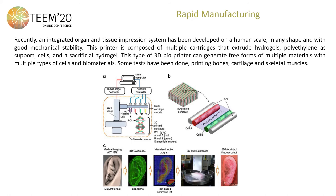The last step to get the prosthesis is rapid manufacturing. An integrated oral and tissue expression system has been developed on a human scale, in any shape, and with good mechanical certainty. This type of 3D bioprinter can generate free forms of multiple materials with multiple types of cells and biomaterials. Some tests have been done printing bones, cartilage, and skeletal muscle. A technology like this will be suitable to develop this type of prosthesis and help people who have microtia.